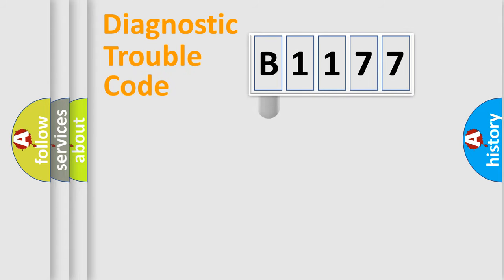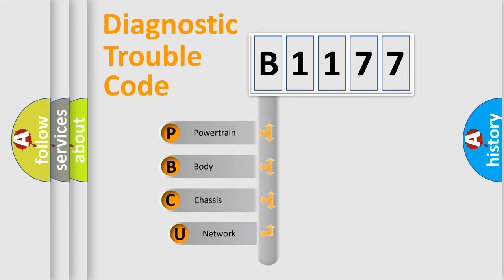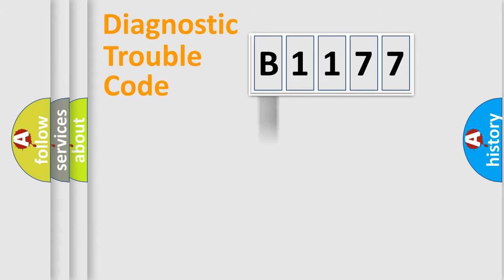Let's look at the history of diagnostic fault code composition according to the OBD2 protocol, which is unified for all automakers since 2000. We divide the electric system of an automobile into four basic units: Powertrain, Body, Chassis, and Network.